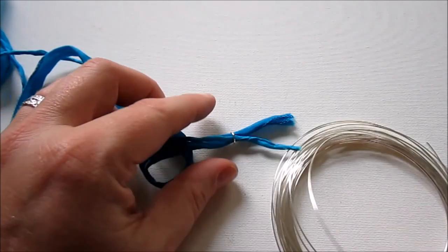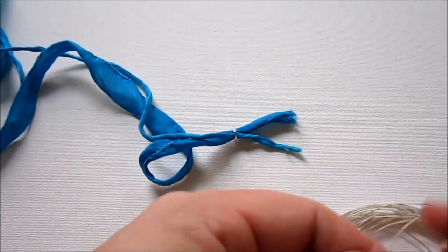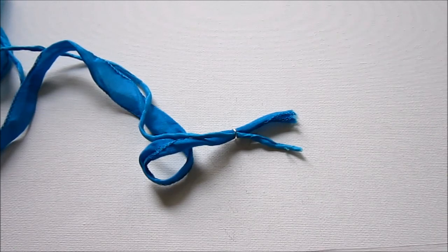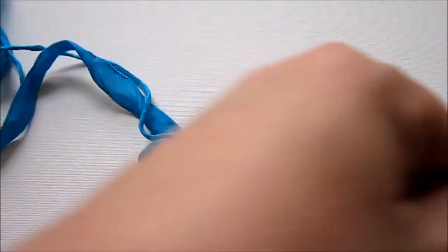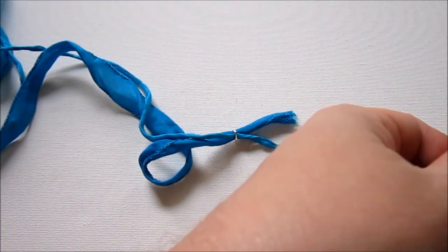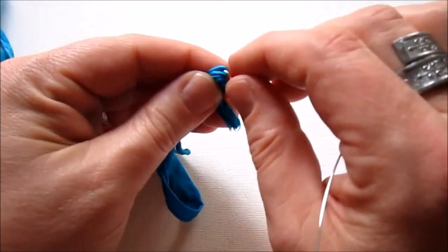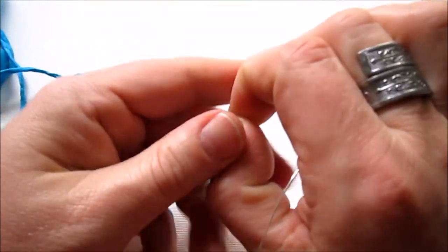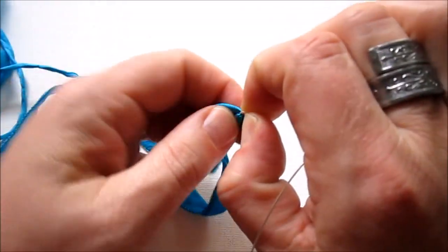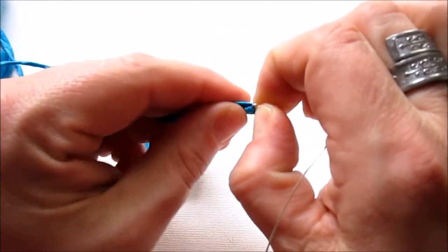Alright, so I have 22 gauge wire. And so, I'm going to just cut off a piece of it about 20 inches long, which may be too much. But I like to have too much rather than not enough. So, we have this folded over. And now we're just going to start wrapping around.